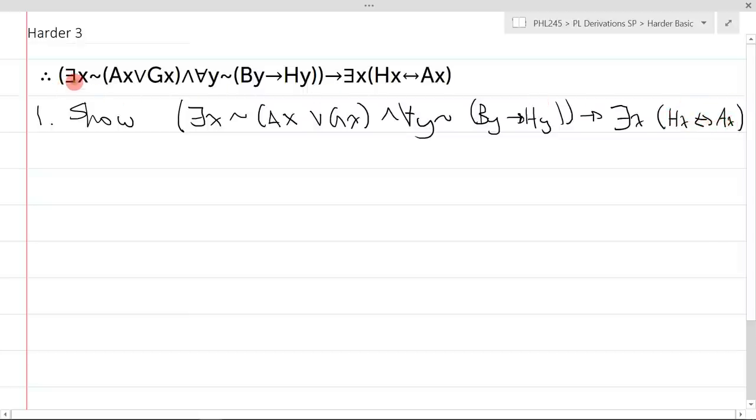Staring at this, I just have to work hard to identify the main connective. This AND binds this with this. The conditional binds this with everything, so the main connective is a conditional. If that's the case, I know to assume CD. So I get there exists X, not AX or GX, and for all Y, not bracket BY arrow HY.